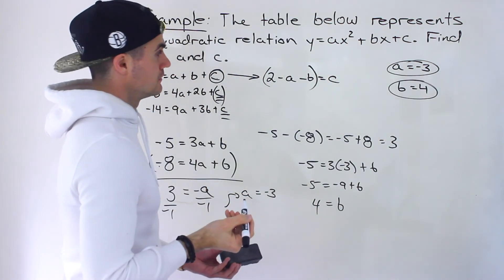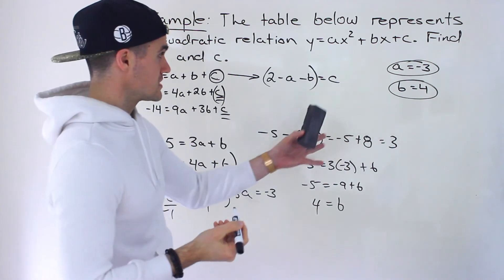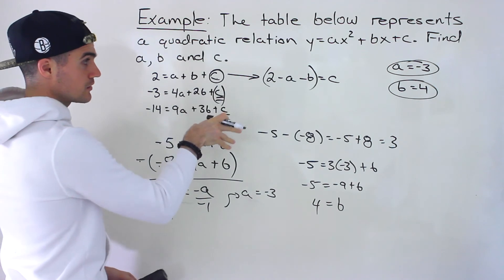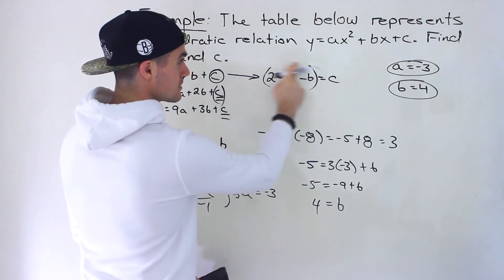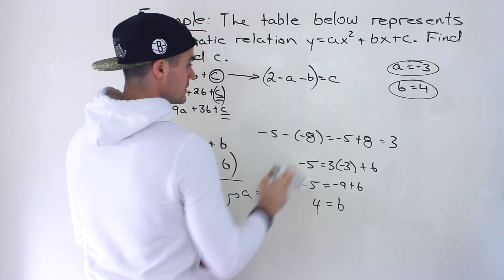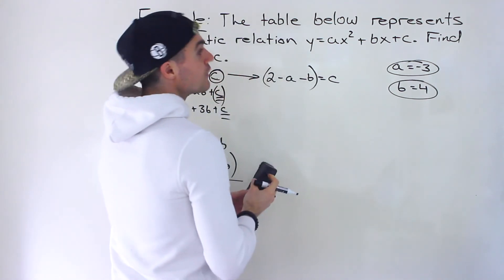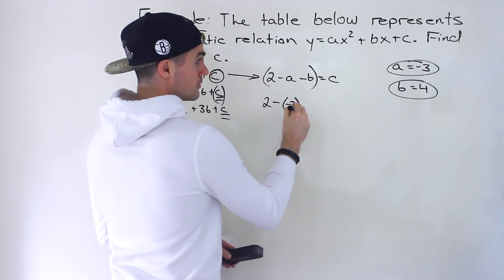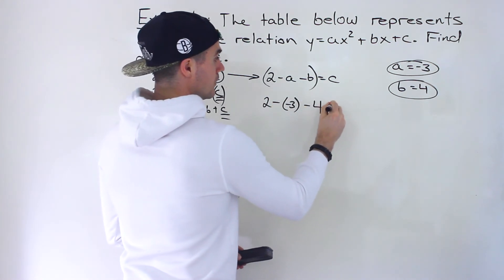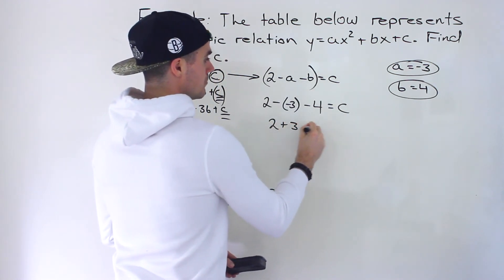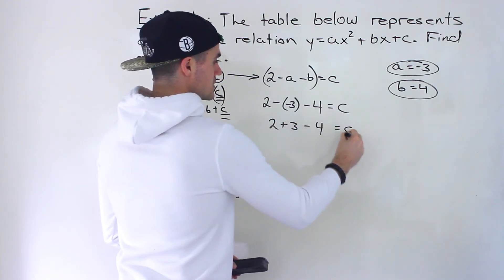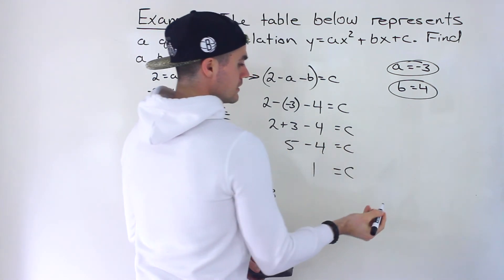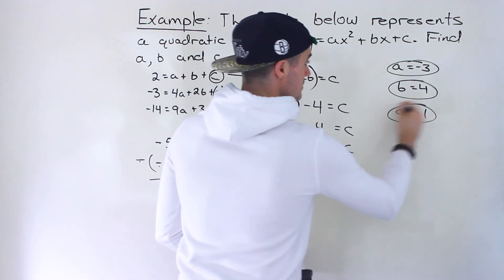We still have to solve for c. We can take those a and b values and plug them into our isolated c expression: c equals 2 minus a minus b. So c equals 2 minus (negative 3) minus 4, which is 2 plus 3 minus 4, giving us 5 minus 4. So c equals 1.